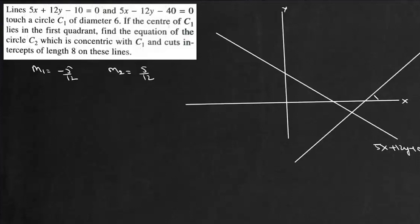So basically these two lines make equal angles. Now a circle whose center is in the first quadrant and which touches both the lines will have its center along this angle bisector. And for this we have to find x-axis coordinate of their point of intersection. So if we add them we'll get 10x minus 50 equals 0. So this line is x equals 5. So center of this circle will lie at 5, k.